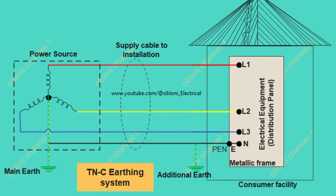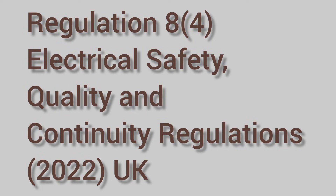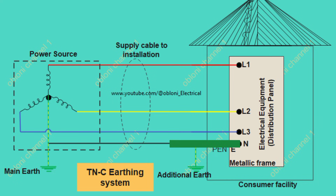The TNC earthing system. With the TNC system, the neutral and earth functions are combined in a single conductor called the PEN conductor — PEN means protective earth and neutral — throughout the entire installation. All exposed metal parts of the installation are connected to the PEN conductor. In this system, the PEN conductor is earthed at multiple points, and an earth electrode may be necessary at or near the consumer installation. However, this system of earthing poses some safety concerns to the consumer.